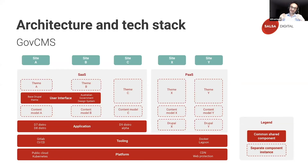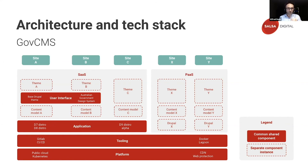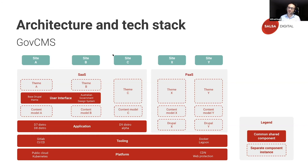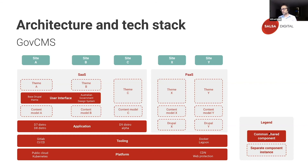Now let's get technical. What you are looking at is the architecture and tech stack for the consolidated GovCMS platform. For context, we have five sites illustrated — site A, B, C, X, and Y — with the platform components sitting underneath shown in red and gray. The red colored boxes represent common shared components, and the red dotted lines represent individual component instances tailored per site. The platform layer represents common hosting infrastructure made up of a multi-availability zone AWS public cloud for resilient hosting, Kubernetes for container management, CDN for fast edge content delivery, and web protection made up of a variety of technologies and practices. This common platform layer is security accredited to a standard known as 'official sensitive.'